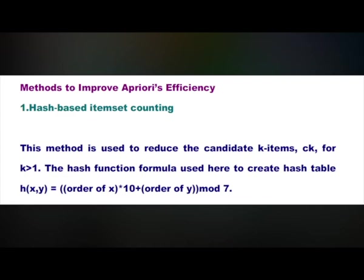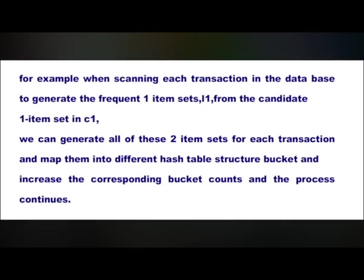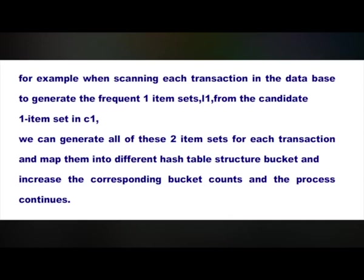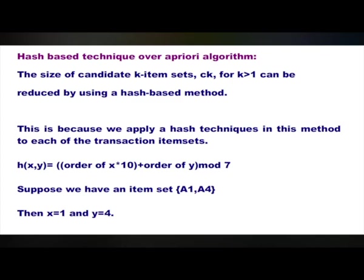Methods to improve Apriori efficiency. The first method is hash-based item set counting. This method is used to reduce the candidate k-item sets C suffix k for all k greater than 1. The hash function formula used here to create a hash table is: h(x, y) = (order of x × 10 + order of y) mod 7. For example, when scanning each transaction in the database to generate the frequent 1-item set L1 from the candidate 1-item set C1, we can generate all two-item sets for each transaction and map them into different hash table buckets, increasing the corresponding bucket counts.